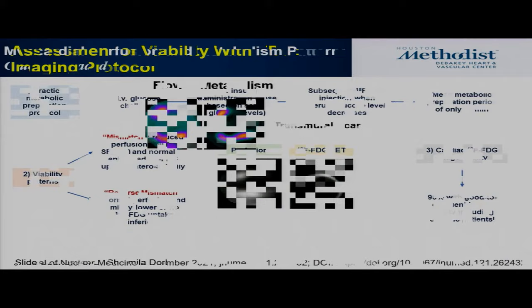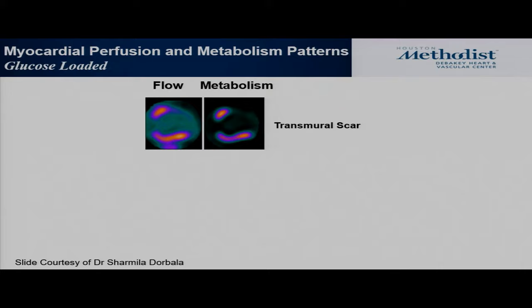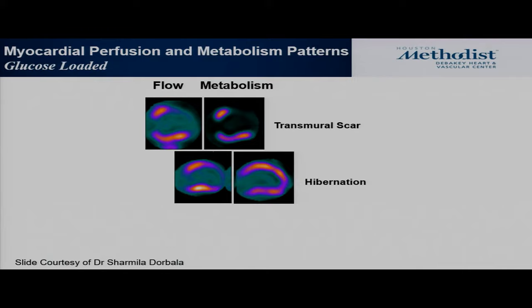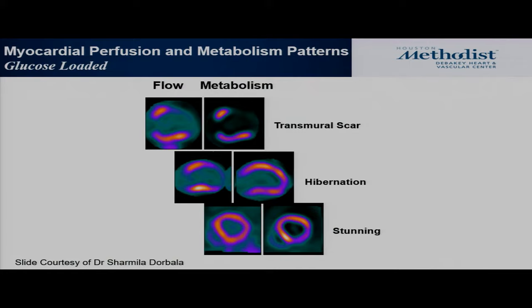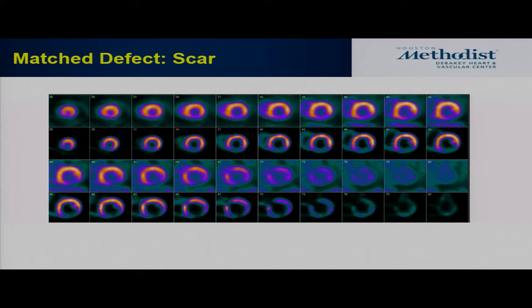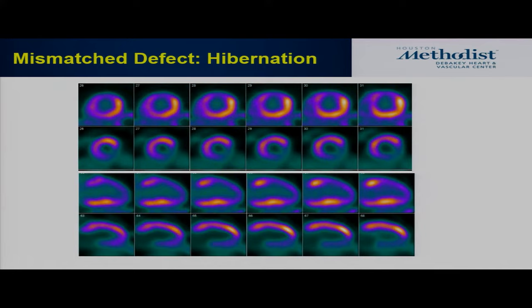How do the images look? We have perfusion and metabolism. Here the anterior wall is missing on metabolism — that's a match defect, which is scar. Here you have a defect in perfusion but good FDG uptake — that's hibernation because that area was viable despite the perfusion defect. And then there is the area the other way — we call that reverse mismatch, with many theories about it including stunning. Here's another case from our lab where you see a large perfusion defect and good uptake except in the apex.